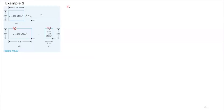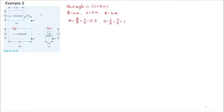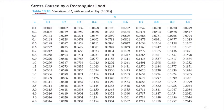For Rectangle 1, it's a 2 by 4 rectangle. B is 2 meters, L is 4 meters, and the depth Z of point A prime is 4 meters. To get the influence factor I3, we need M and N values: M is B over Z, and N is L over Z. Then we use Table 10.10 to find the I3 value. With M equals 0.5 and N equals 1.0, the corresponding I3 value is 0.1202.